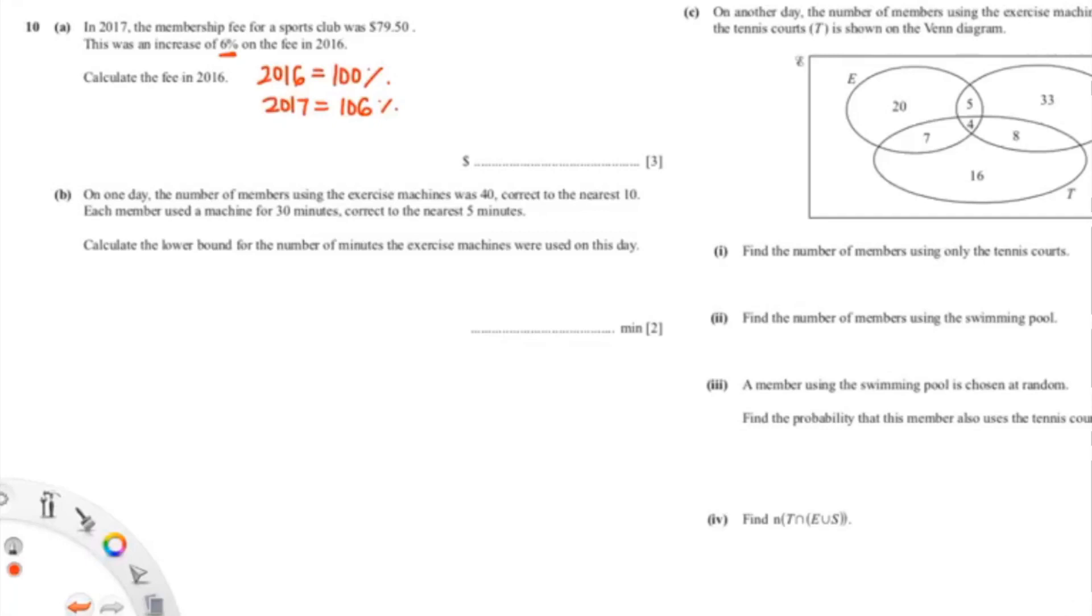Now you can see that they want us to find out the fee in 2016. Let's say that's X. So X equals 100%, and in 2017, the fee was 79.5 equals 106%. Now you can just cross multiply.